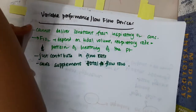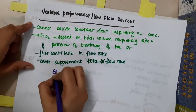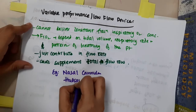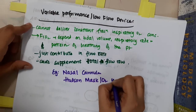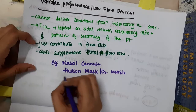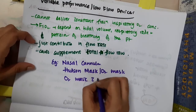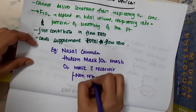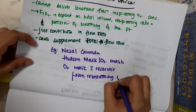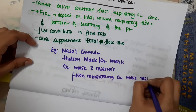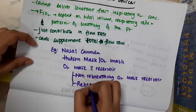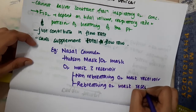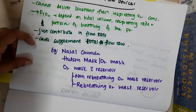Examples of low flow devices are: nasal cannula, Hudson's mask or oxygen mask, and oxygen mask with reservoir. The oxygen mask with reservoir comes in two types — first, non-rebreathing oxygen mask reservoir, and second, rebreathing oxygen mask reservoir.